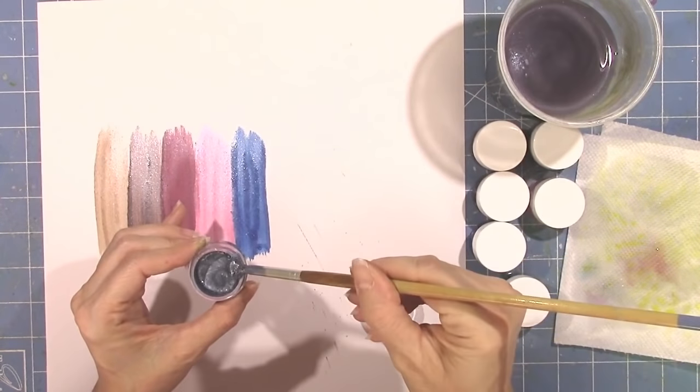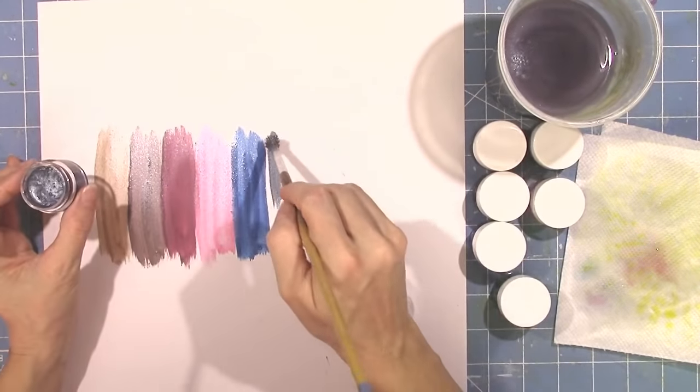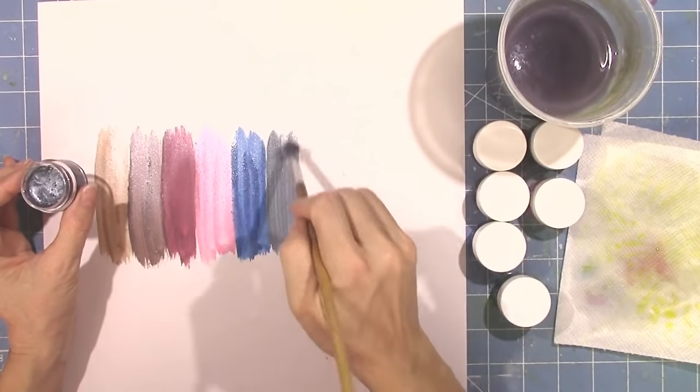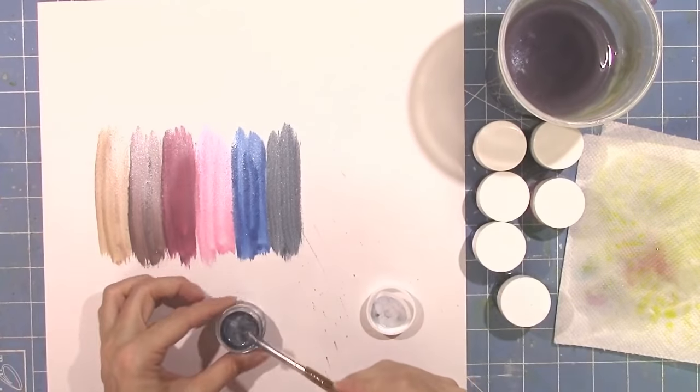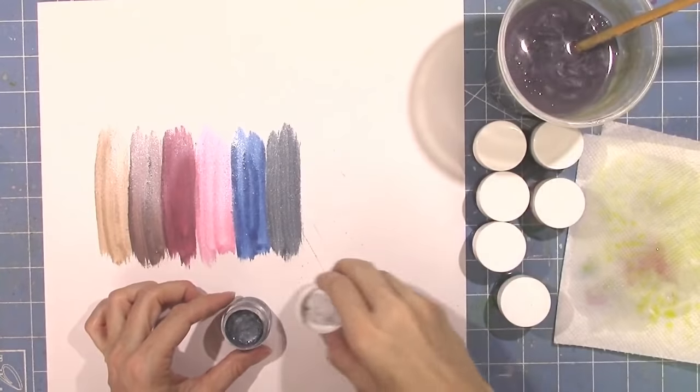This is a greenish teal color. It's called Teal the End of Time. And it's on the darker side there.